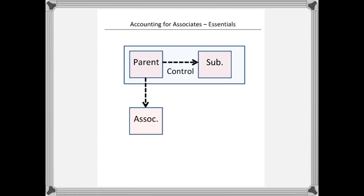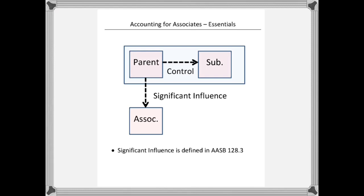What we'll be looking at in this guide is a situation where the parent doesn't have control over another company, but rather has significant influence over another company. AASB 128 paragraph 3 defines significant influence — in essence it's the power to participate in the financial and operating policy decisions. So there's a lessening of the absolute power they have, but the parent still does get a say in what happens with that particular company.